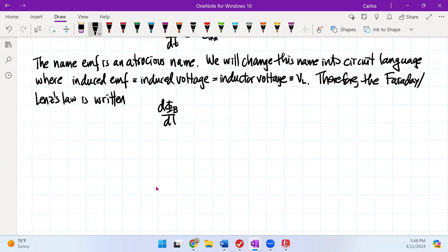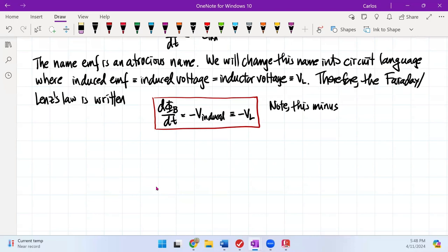We're going to say that we have the derivative of the magnetic flux with respect to time. It's going to be minus V_induced, which we now defined as V_L. It's important to note this minus sign is always present.